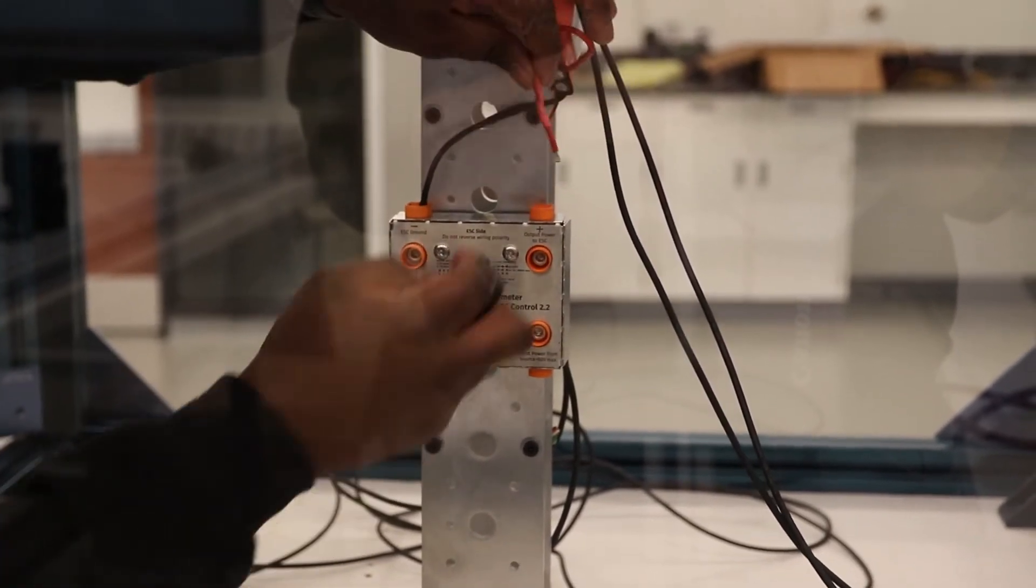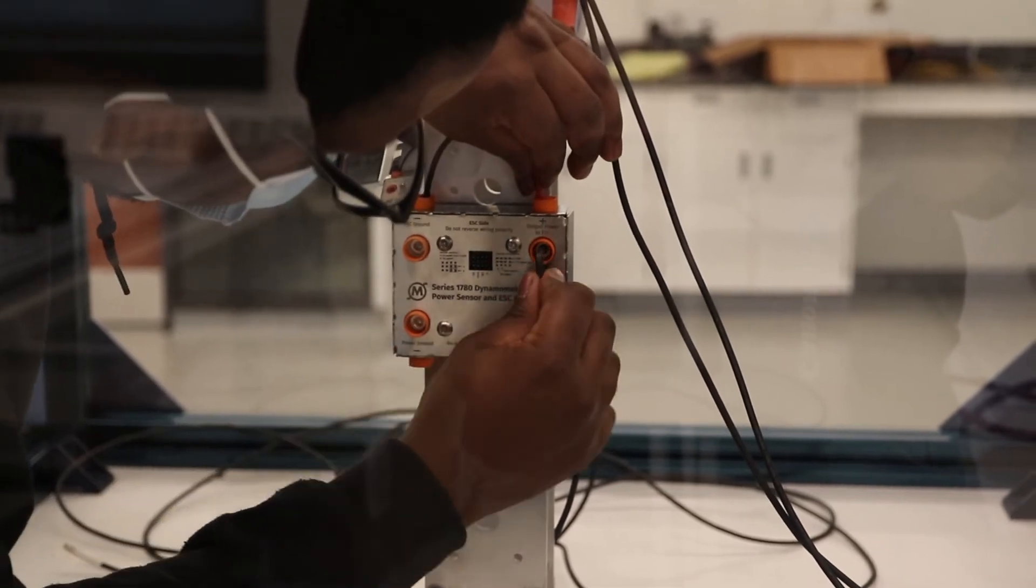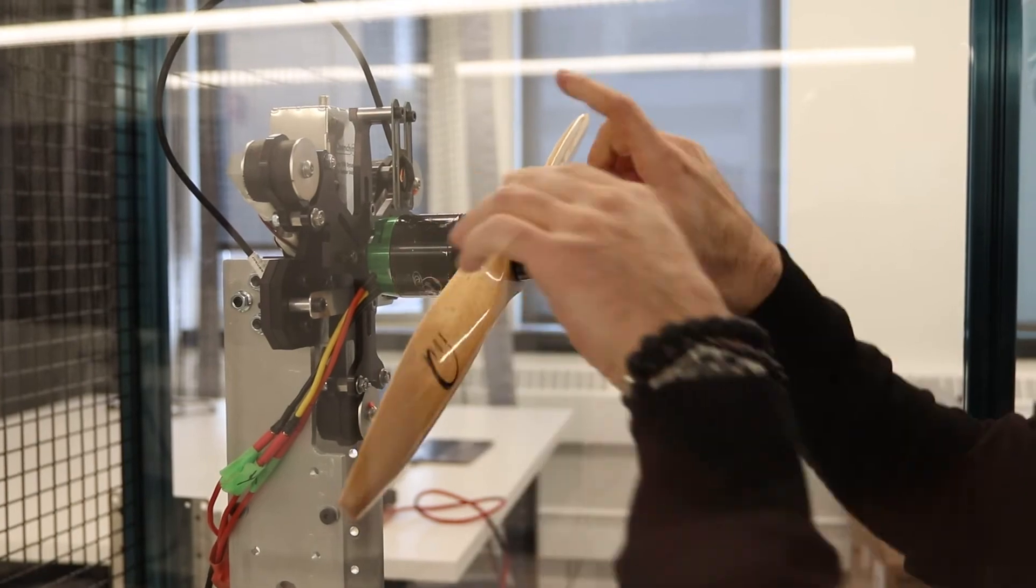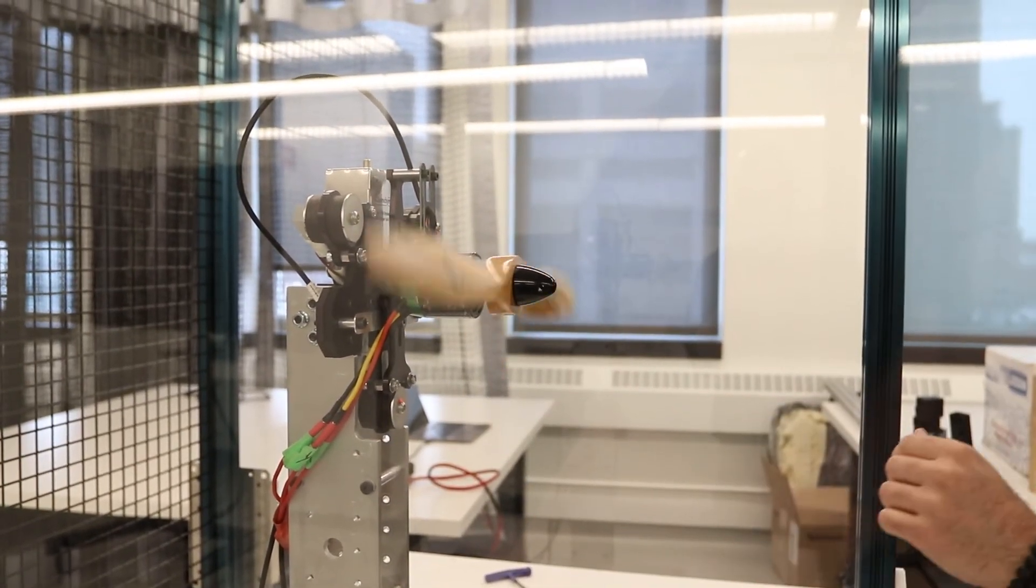Testing propellers allow us to verify the manufacturer data as well as our calculations. When we are designing the aircraft, we make a great deal of assumptions, especially in terms of the motor selection and the propeller selection. Having the Tito Robotics 1780 stand allows us to not only confirm our design, but also to optimize our performance during competition.